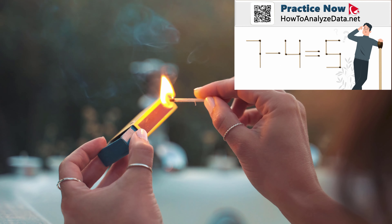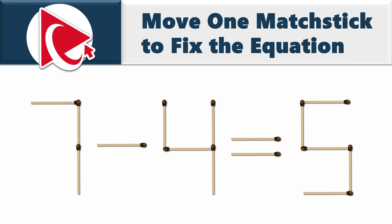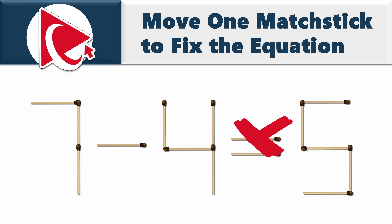You're presented with the equation which is built with matches. You need to move one matchstick to fix this equation, because the way it looks, it's not correct. The current equation is 7 minus 4 equals 5, which mathematically is not correct.